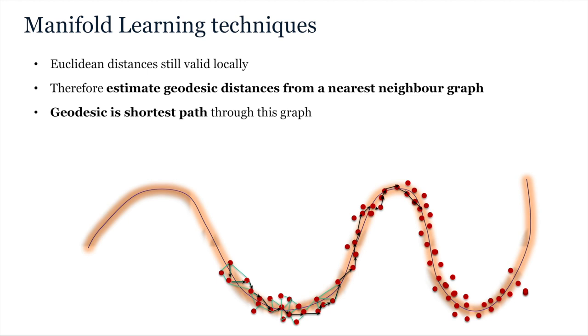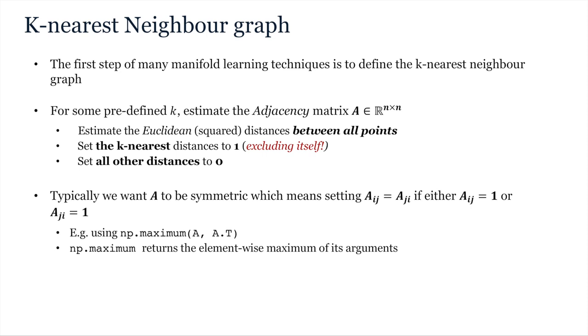To estimate a k-nearest neighbour graph, you must first decide on what k you are going to use. Then, what you need to do is estimate the squared Euclidean distances between points. That will return you a n by n full adjacency matrix, where n is the number of points. Subsequently, you then need to set the k-nearest distances to 1, where you exclude the distance between a point and itself. So that means that the diagonal of A will always be zeros. Once you've done that, set all the other distances to zero.